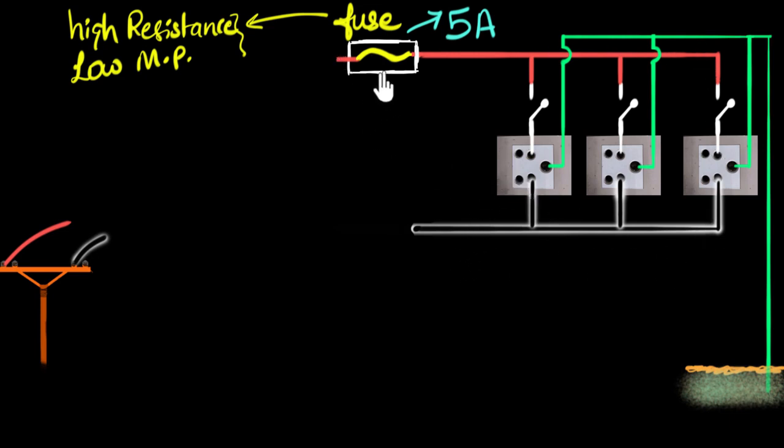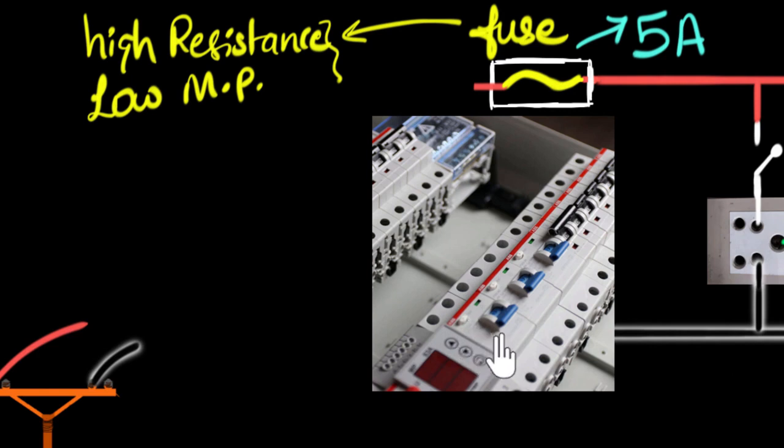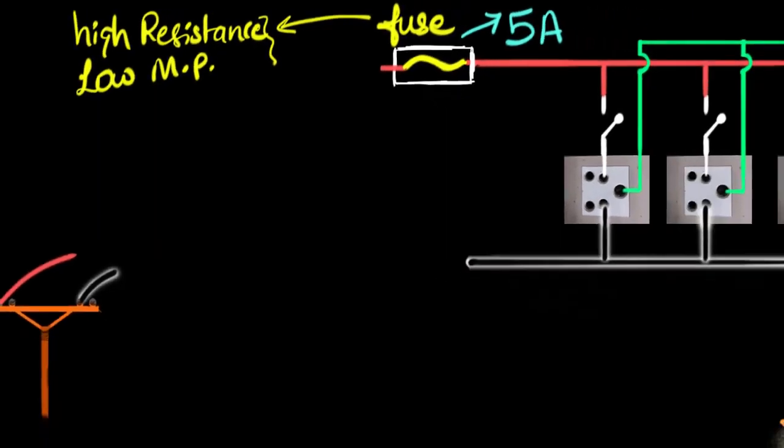And of course, you may be wondering, hey, I don't see these fuses in my house today. Where are they? Well, today they have been replaced by these new devices called circuit breakers. They work on a very similar principle, but over here they don't melt. You don't have to change the wire every time a fuse blows up. They just disconnect automatically. A little bit more advanced, but the idea is the same.